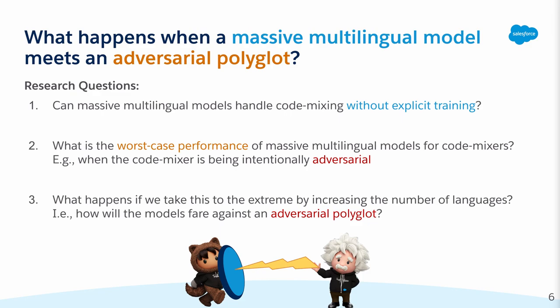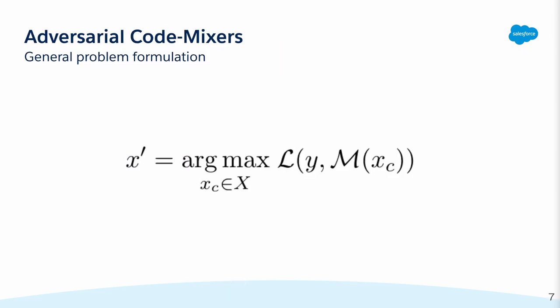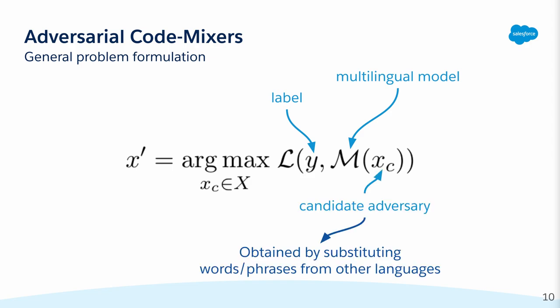Since we are not restricted to using a human adversary, we take this idea to the extreme by drastically increasing the number of languages the attacks can draw from. Generally, the problem we are trying to solve is the following: given a multilingual model, the original example's label, and candidate adversaries obtained by perturbing the original input, we aim to generate a code-mixed adversary by searching for the candidate that maximizes the target model's loss.